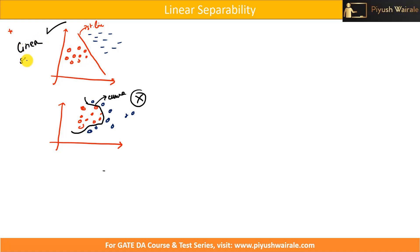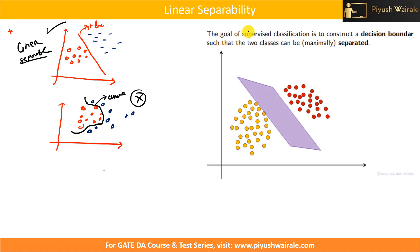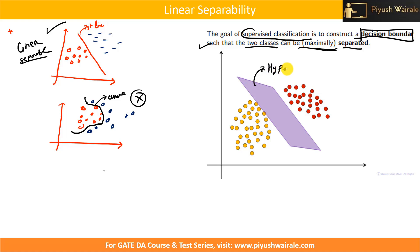The goal of supervised classification is to construct a decision boundary so that we can separate the two classes such that they are maximally separated. This decision boundary is basically a hyperplane. In two dimensions it is a line, but in three dimensions it is a hyperplane. I can separate yellow and red data points using this hyperplane — this is an example of linear separability.